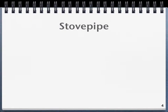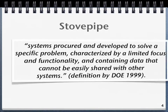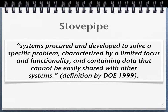So what is a stovepipe anyway? Stovepipes are defined as systems procured and developed to solve a specific problem, characterized by limited focus and functionality, and containing data that cannot be easily shared with other systems. The creation of a stovepipe begins with stovepiped thinking, which then leads to highly idiosyncratic ways of defining entities and events that make up a domain.